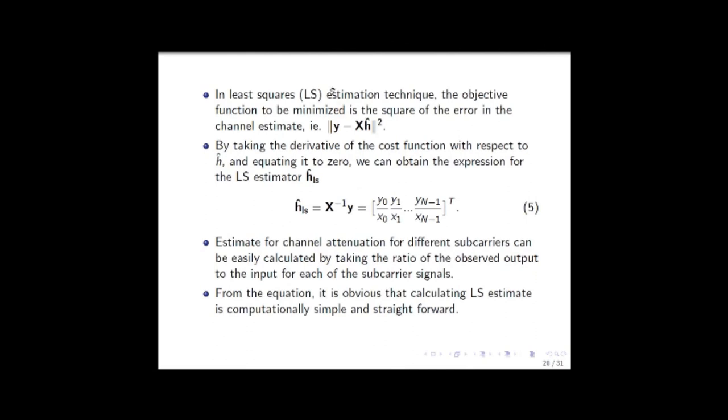In least squares estimation technique, the objective is to minimize the error as much as possible. The objective function is the second norm of Y minus X times H cap, where H cap is the estimate. By taking the derivative of this expression and equating it to zero, we can easily derive the expression for H_LS, which is the least square estimate of the channel. It is given by X inverse of Y. The vector would be of this form where you have Y0/X0, Y1/X1, etc., Yn-1/Xn-1.